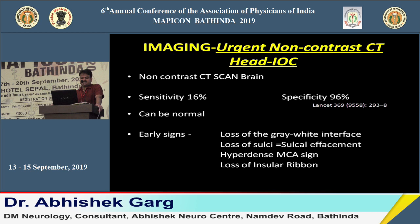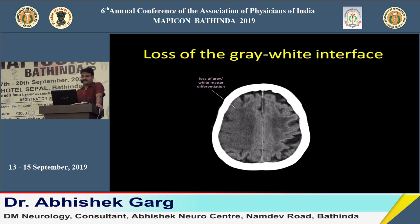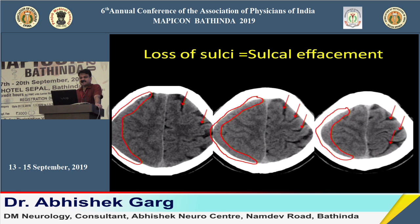There are early CT signs suggesting ischemia. First is loss of gray-white interface — blurring between gray matter and white matter on the affected side compared to a clear distinction on the normal side. Second is loss of sulci — on the affected side, sulcal spaces are obliterated while clearly visible on the normal side.